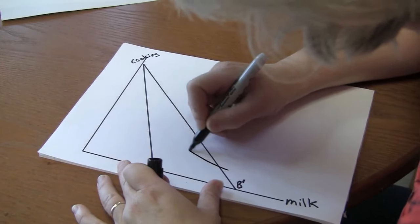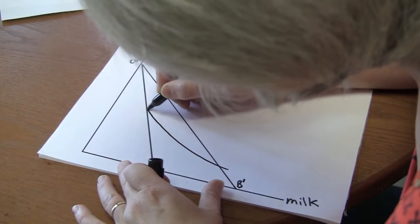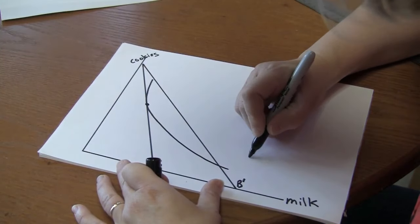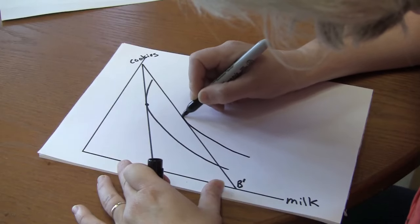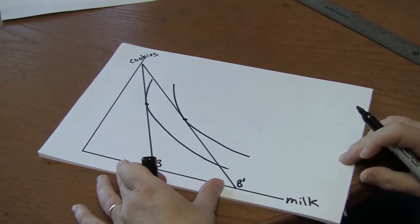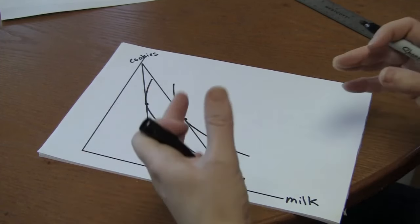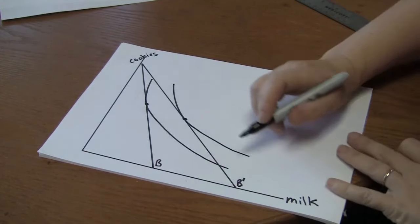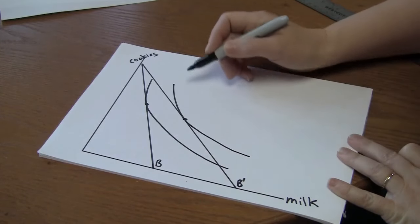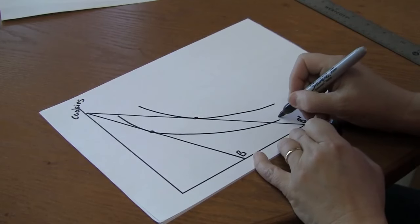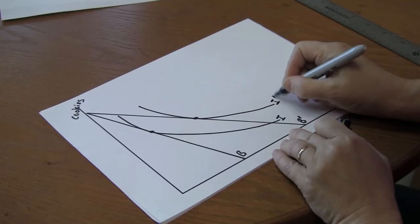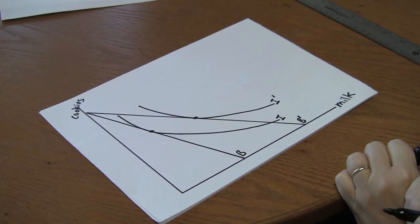Here's the consumer's original indifference curve. Here's the indifference curve after the change in prices. Notice how when I drew it, I moved the paper around and drew it sort of upside down like this. Original indifference curve, indifference curve after the price fall.